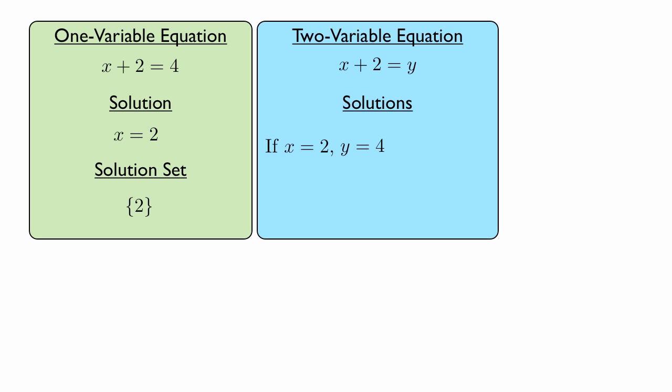Because we're taking the x, replacing it with 2, 2 plus 2 equals 4. And so the solution is the point (2, 4). This could be called a point, a coordinate, or an ordered pair. The first element is the x value, and the second element is the y value.